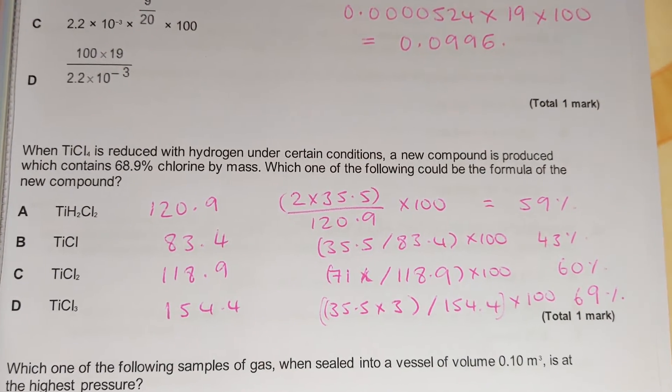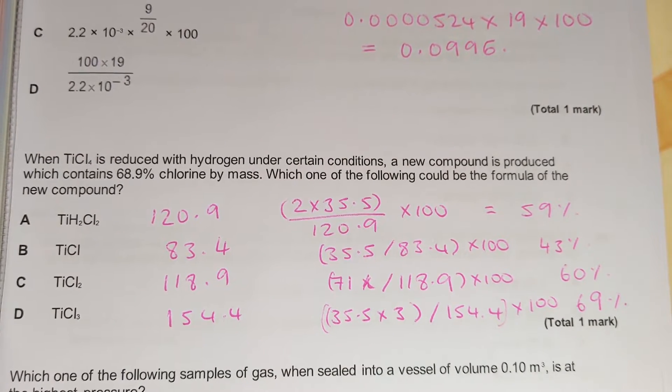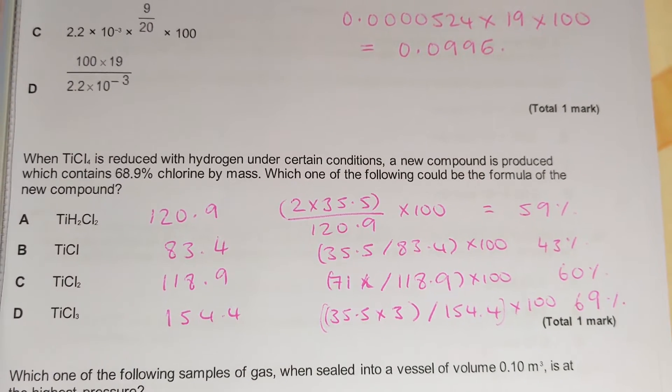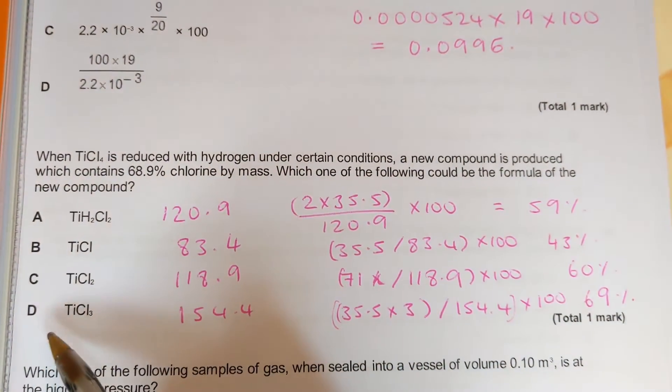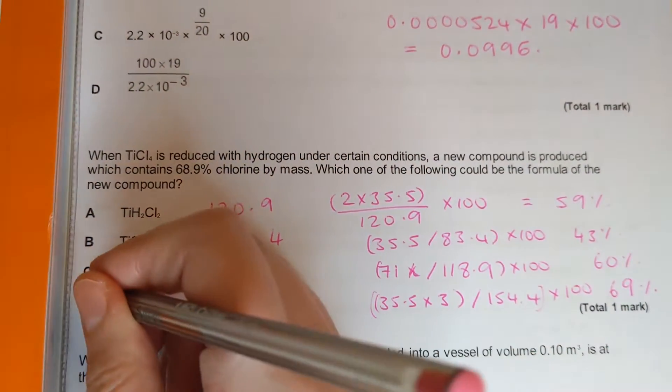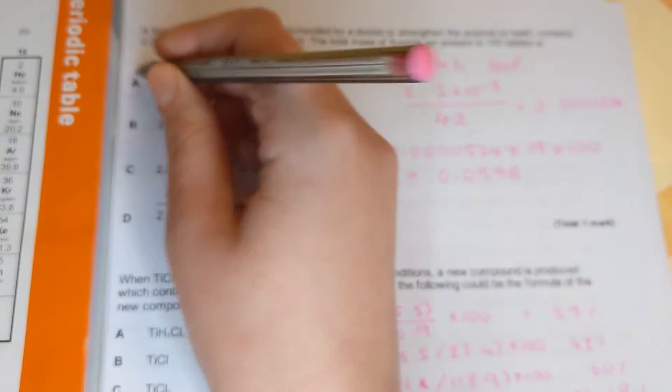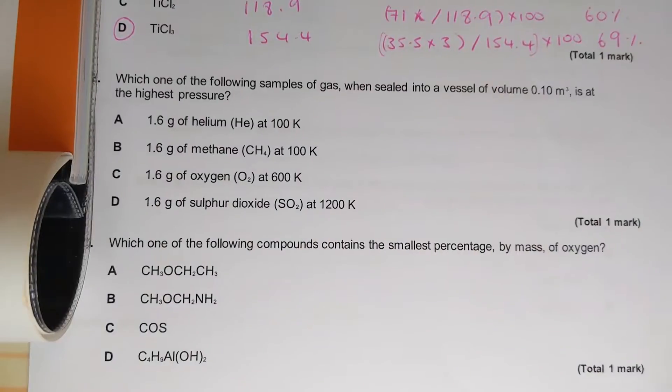So there are the answers. I've rounded my percentages to two significant figures and if we look at the question it says a new compound is produced which contains sixty eight point nine percent chlorine by mass. So the correct answer is D because that is the closest to sixty eight point nine.